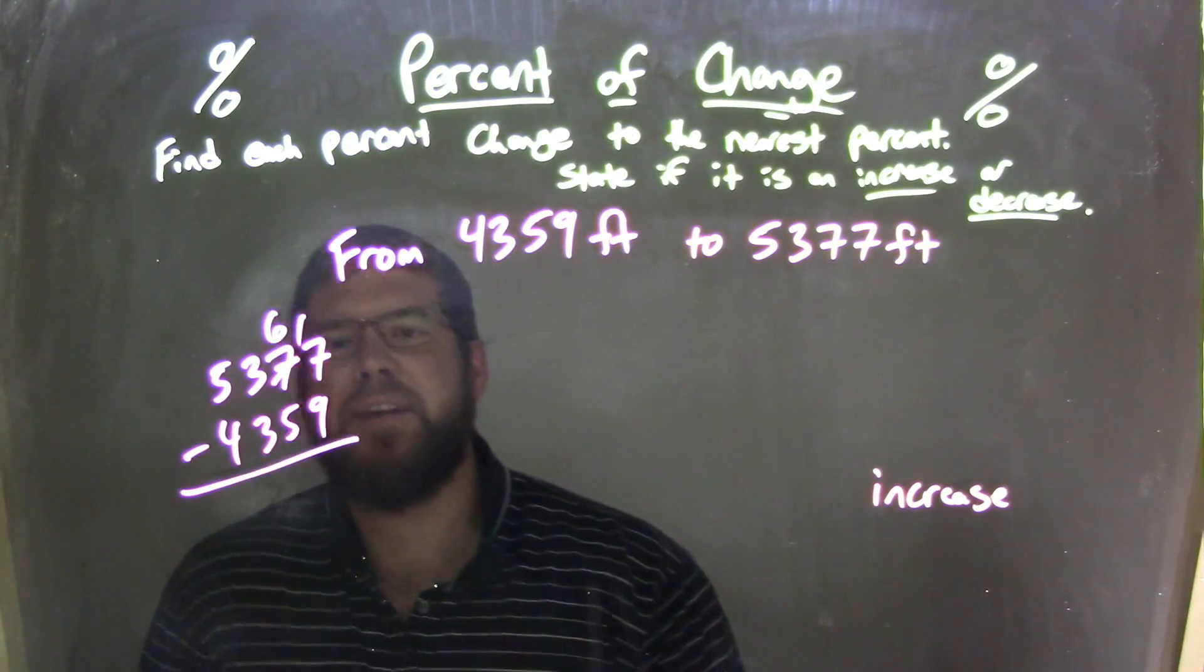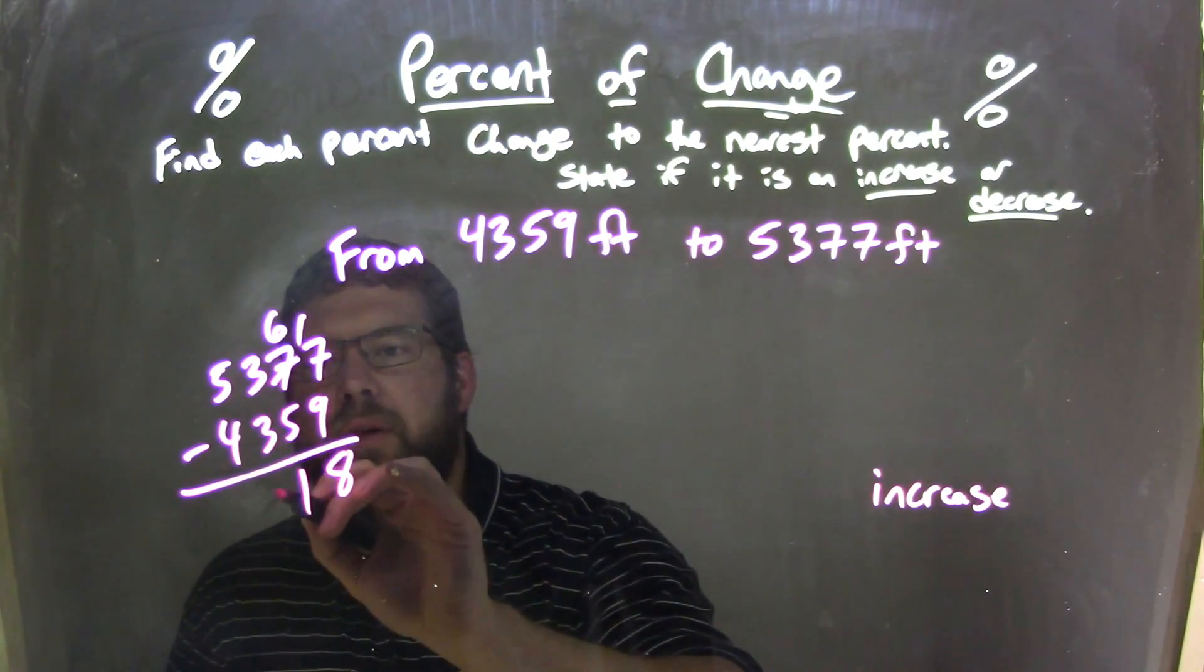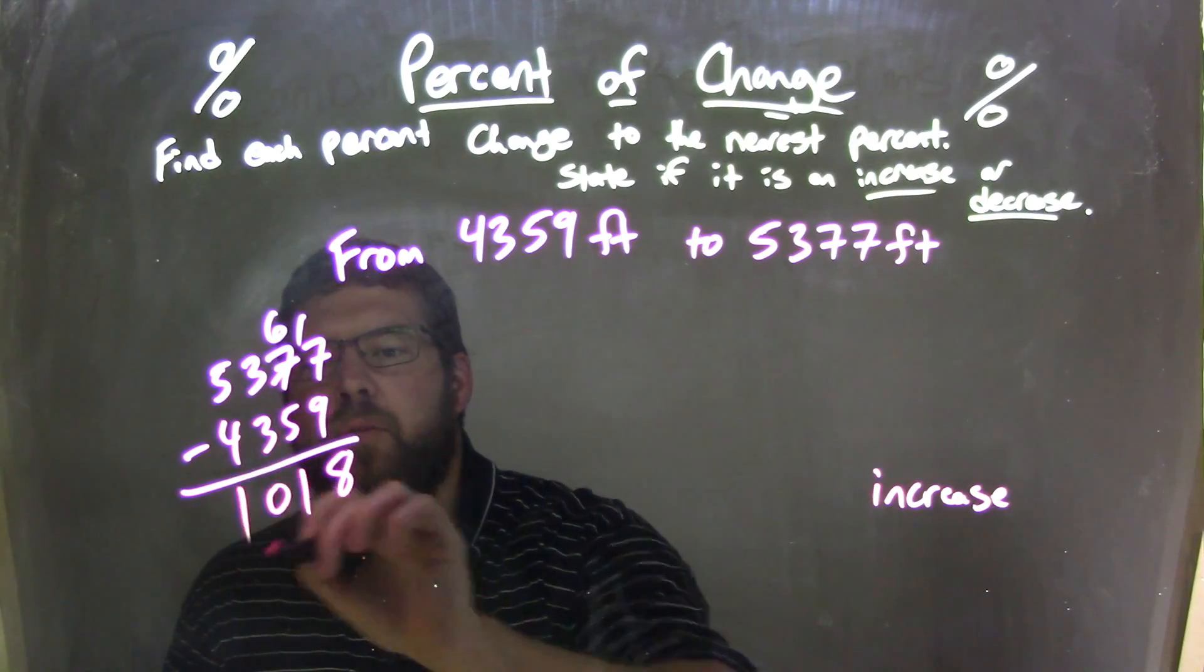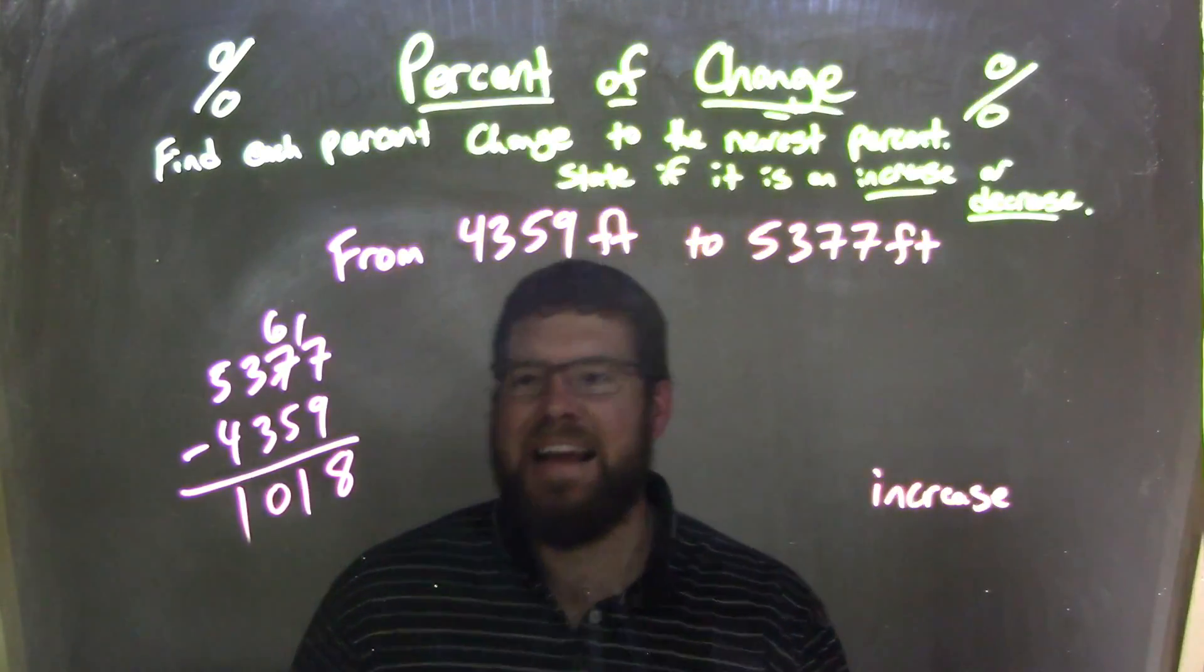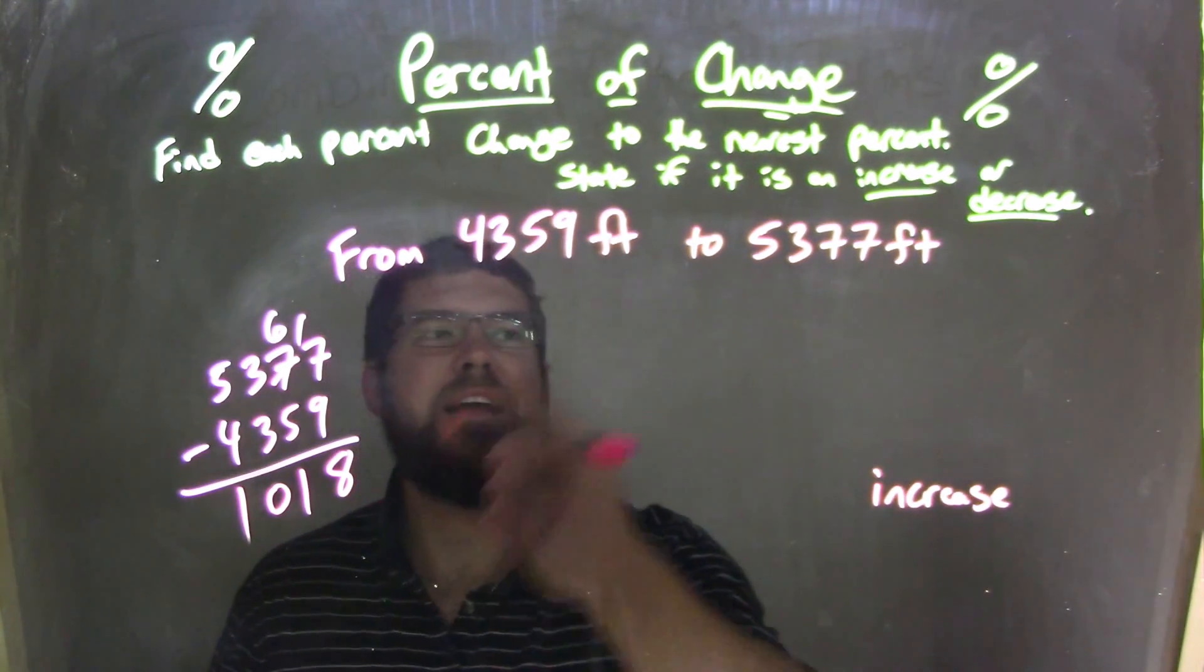So I take a 7, make it a 6, 17. 17 minus 9 is an 8, 6 minus 5 is a 1, 3 minus 3 is a 0, and 5 minus 4 is a 1. So we have 1,018 as our subtraction answer here, it's a feet increase going on, right?